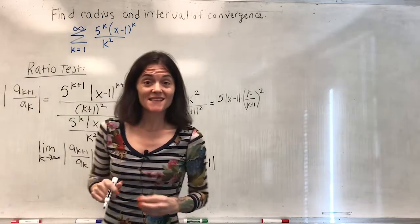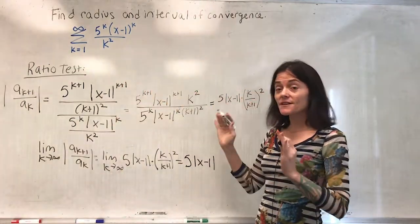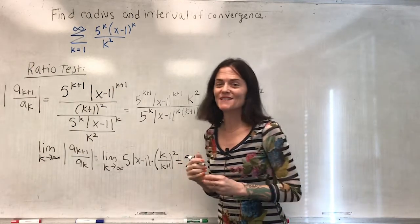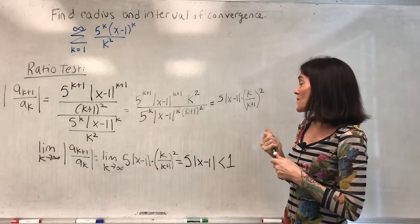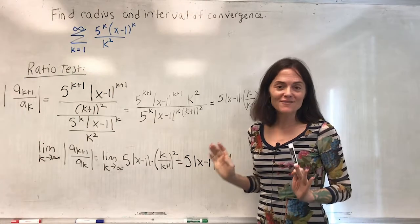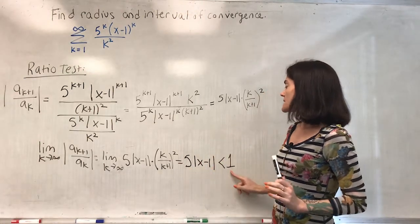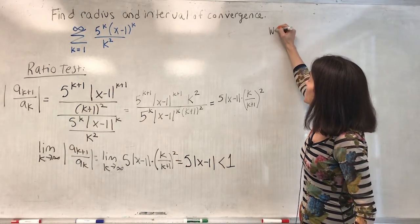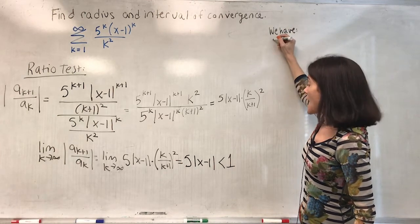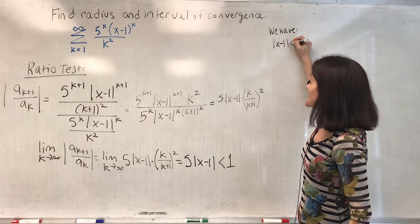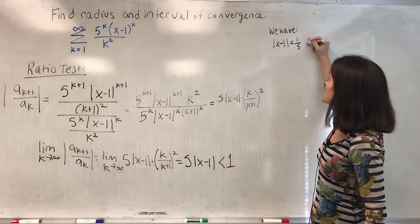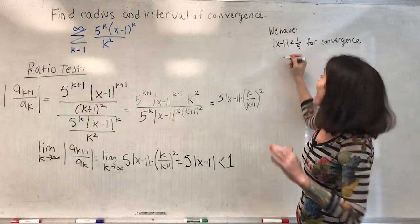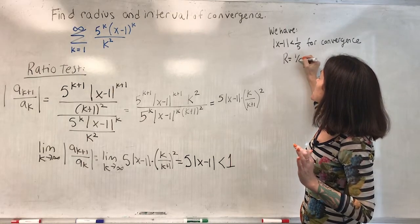The ratio test says the series converges provided this limit is less than 1, and we get absolute convergence in this case. This is how I find the radius: I divide by 5, giving |x minus 1| < 1/5 for convergence, which tells us the radius of convergence R = 1/5.